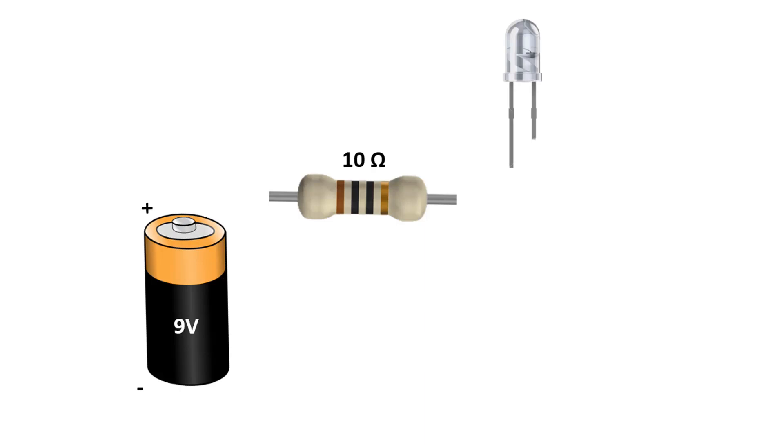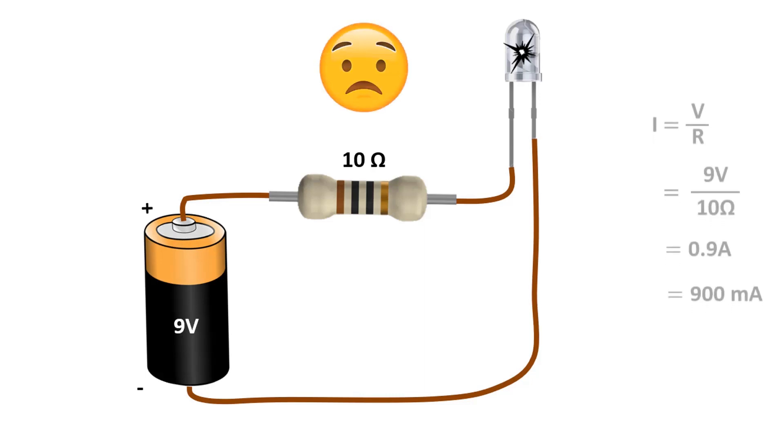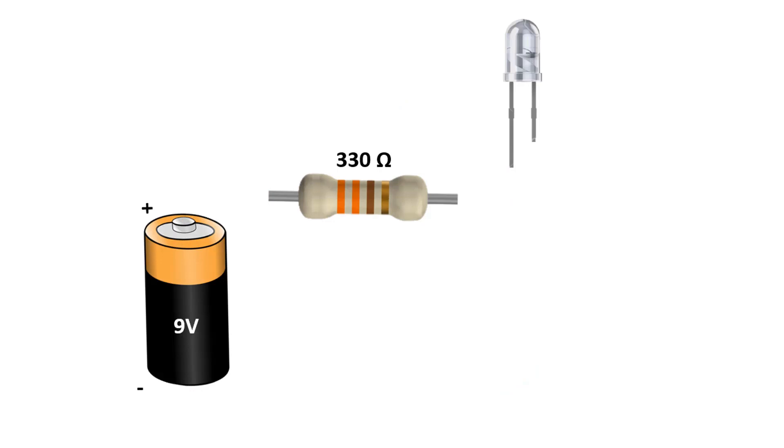The current that an LED must flow through in order to give light without being damaged is around 30 milliamps. If it's too low, it will not light. If it is too high, it will explode and be damaged. Let's connect a 10 ohm series resistor to the LED in the circuit here. The LED will glow very bright at first and then explode. Because when we calculate the current passing through the circuit, it will be approximately 900 milliamps from 9 volts divided by 10 ohms. Since this current is too high for the LED, it is damaged.